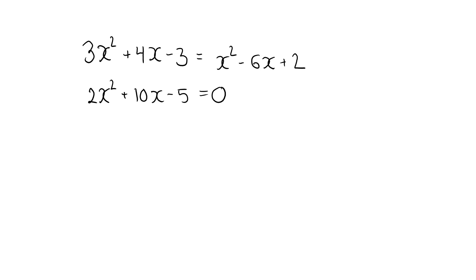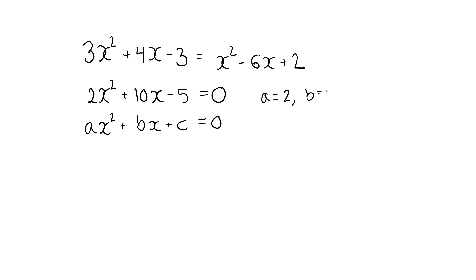Therefore, a quadratic equation can always be written as a times x squared plus b times x plus c equal to 0. In my example, a is equal to 2, b is equal to 10, and c is equal to minus 5.